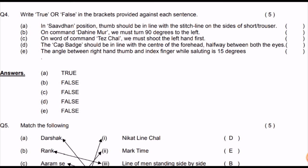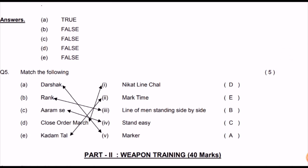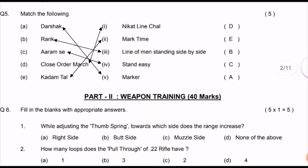The cap badge on the beret should be placed on the center of the forehead — False; it is placed over the left eye. The angle between the right thumb and index finger while saluting is 15 degrees — True. When you give a front salute, the angle between thumb and index finger is 15 degrees. The statement in the paper says false, but the correct answer is True.